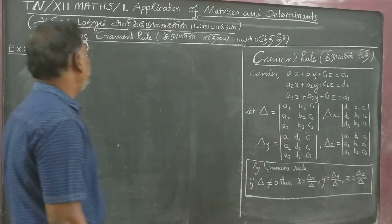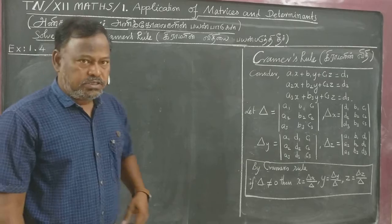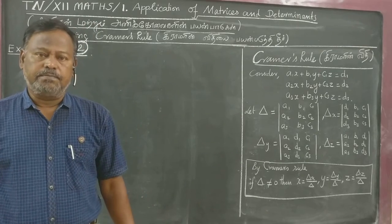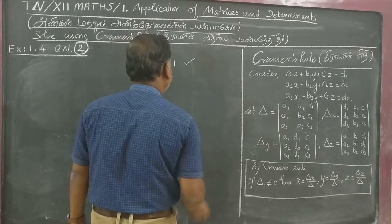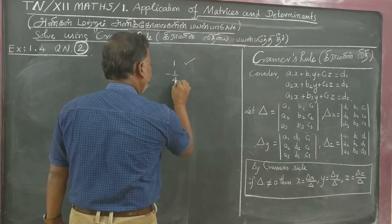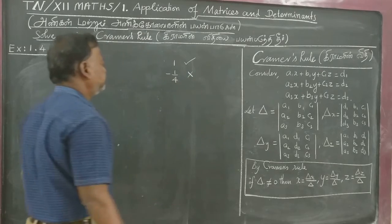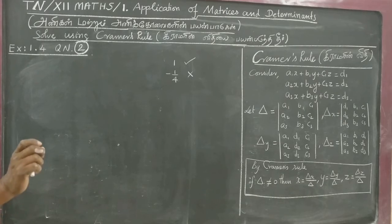Now Exercise 1.4, Question 2. One person is attending an exam. He is awarded one mark for the right answer and awarded minus 1/4 for wrong answer.